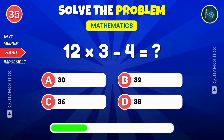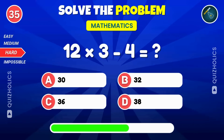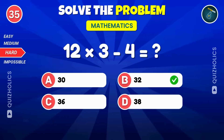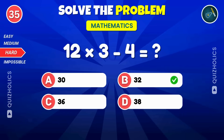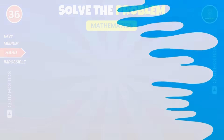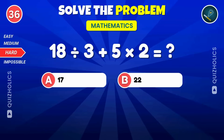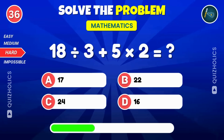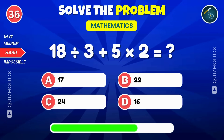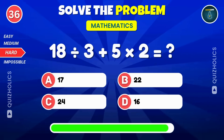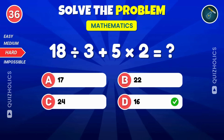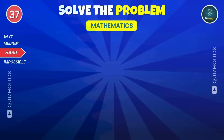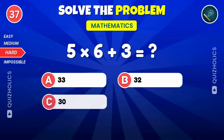How many have you solved so far? Let us know in the comments. Calculate 18 divided by 3, then add 5 times 2. Solve 5 times 2 times 6, and add 3.